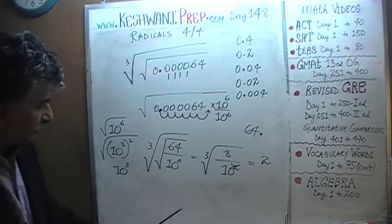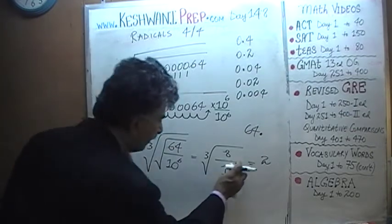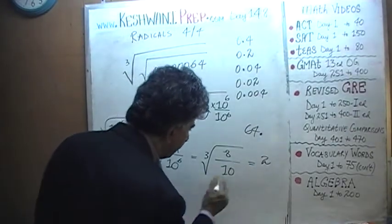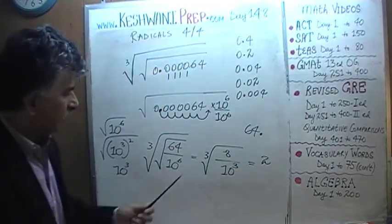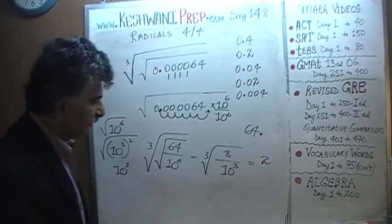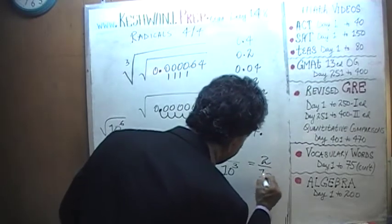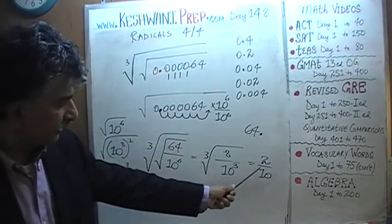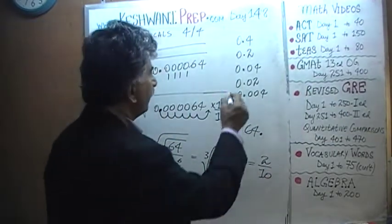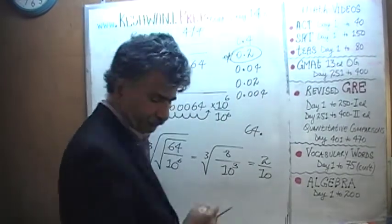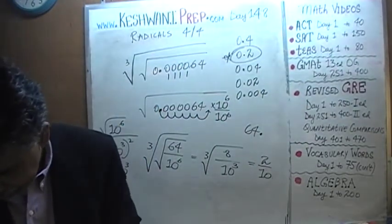That's not 10 squared. It's 10 cubed because now we have to take the cube root of it. It's 10 cubed. And the cube root of 10 cubed is just 10. The cube root of 10 cubed is just 10 and now 2 over 10 is 0.2. The answer is 0.2.